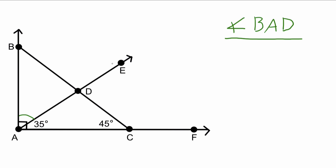Since we know that the whole angle BAC is 90 degrees, we're going to take 90 degrees minus 35, and that will give us the measure of angle BAD, which is 55 degrees. Pretty simple.